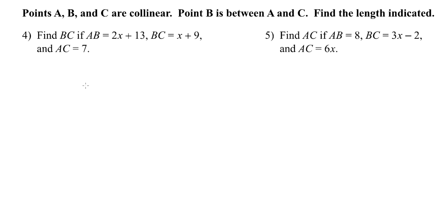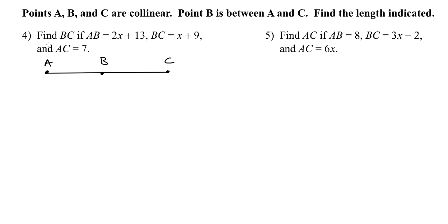For questions 4 and 5, they don't give us a diagram — they just tell us points A, B, and C are collinear, and point B is between A and C. It's a good idea to draw a diagram and label the parts. For number 4, find BC if AB is 2x plus 13, BC is x plus 9, and AC is 7.